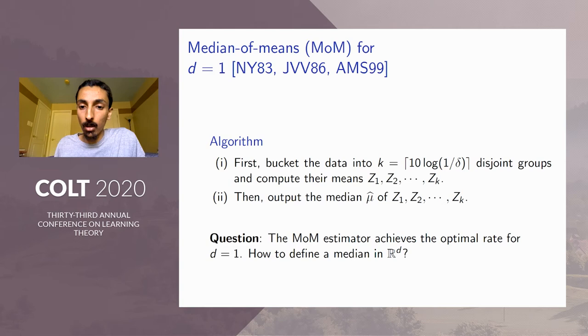Once we partition the data into groups, the n samples into groups of equal size, we compute the means within each group. So I'm going to call these throughout the talk z_1 to z_k. So these bucket means z_1 to z_k are then collected, and the final estimate is simply the median of these k bucket means.